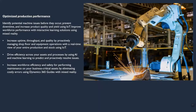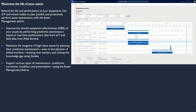Optimized Production Performance: Identify potential machine issues before they occur. Prevent downtime and increase product quality and yield using IoT. Improve workforce performance with interactive learning solutions using mixed reality. Increase uptime, throughput and quality by proactively managing shop floor and equipment operations with a real-time view of your entire production and stock using IoT. Drive efficiency across your assets and processes by using AI and machine learning to predict and proactively resolve issues. Increase workforce efficiency and safety for performing maintenance on business-critical assets by eliminating costly errors using Dynamics 365 guides with mixed reality.